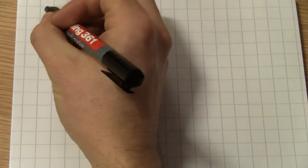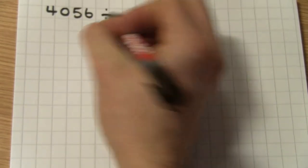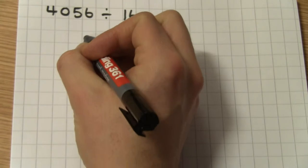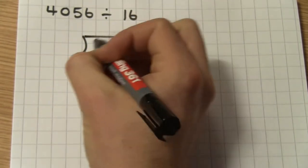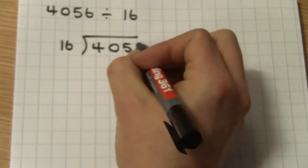OK, we're going to look at long division again, but this time it's going to have a remainder. Hold on to your hats. We're going to divide a four-digit number, 4056, by a two-digit number, 16. As per usual, I'll set up my bus stop. There we go.